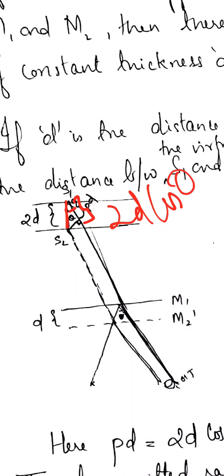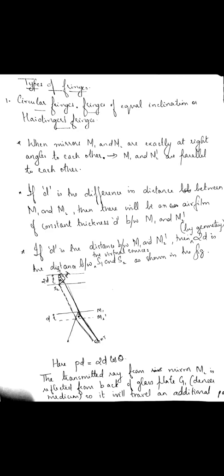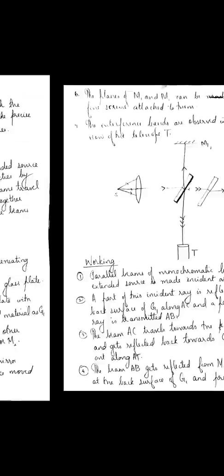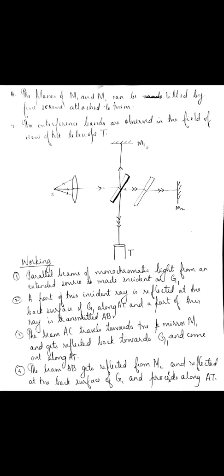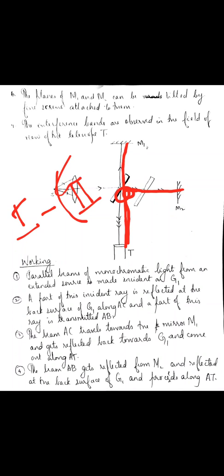Now we have to consider one more additional term. The first ray is simply transmitted to the telescope, whereas the second ray, after reflection from M1, is reflected from the back of the mirror — meaning it is reflected from a denser medium.